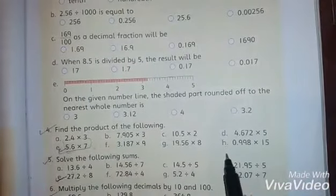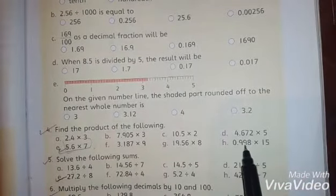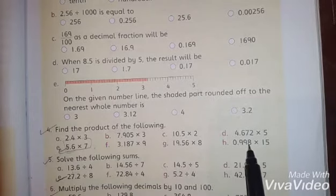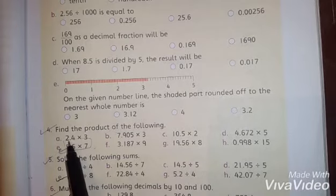Students now question number 4 Part B. You can see here on the question number 4 Part B. Here you have 0.998 multiply by 15. Here we have values 1, 2, 3. It means that it is 3 decimal places. Here we have 1 decimal place.